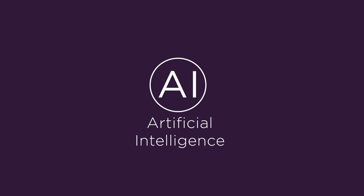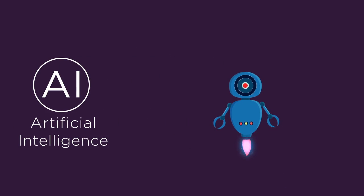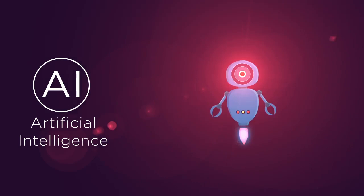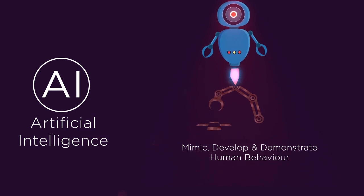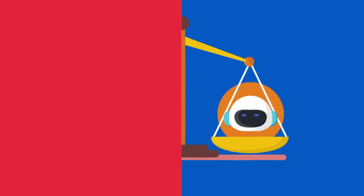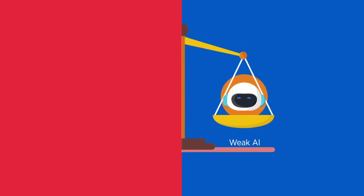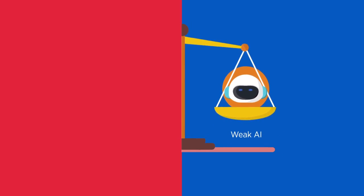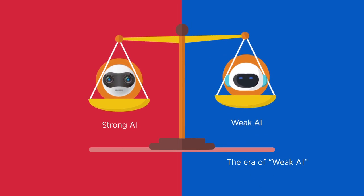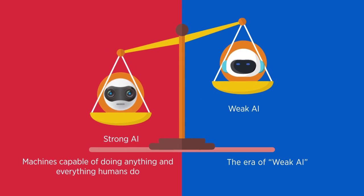First up, artificial intelligence, or AI. What is it? Artificial intelligence is simply any code, technique, or algorithm that enables machines to mimic, develop, and demonstrate human cognition or behavior. We are in what many refer to as the era of weak AI. The technology is still in its infancy and is expected to make machines capable of doing anything and everything humans do in the era of strong AI.